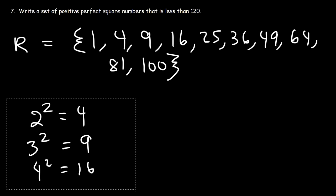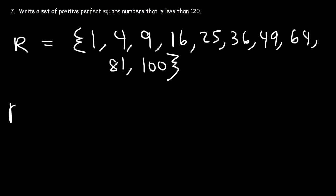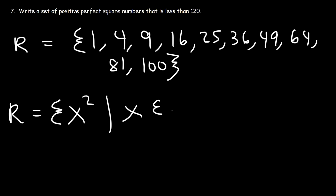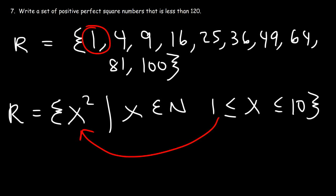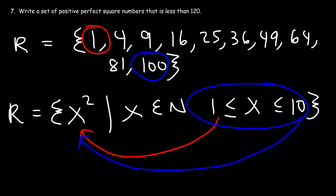Those are the positive perfect square numbers less than 120. For set-builder notation, the expression in terms of X is X squared. X is a natural number between 1 and 10. Plugging in 1 gives 1 squared equals 1; plugging in 10 gives 10 squared equals 100. Any natural number between 1 and 10 — not a decimal or fraction — will produce all of the numbers in this set.